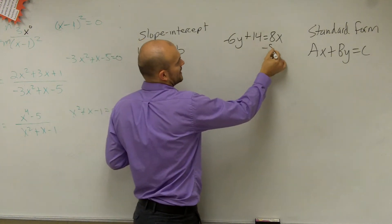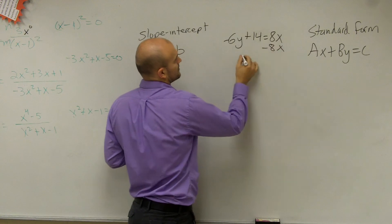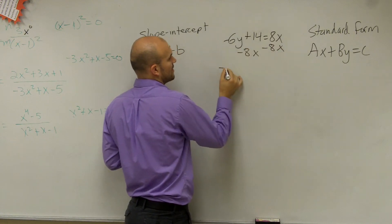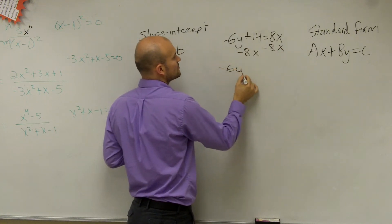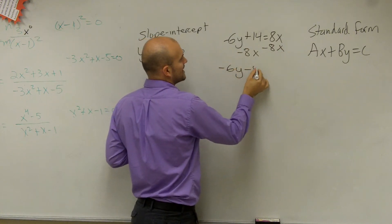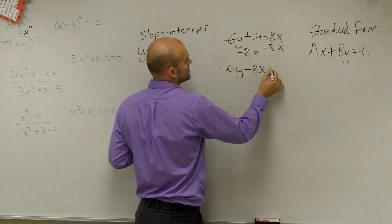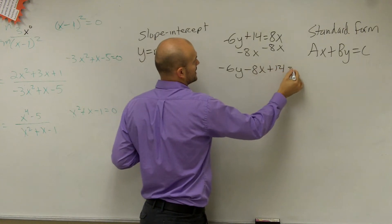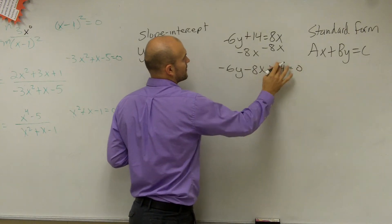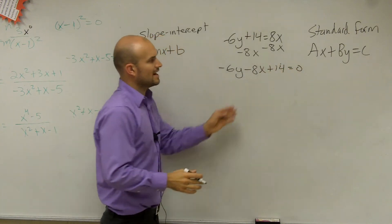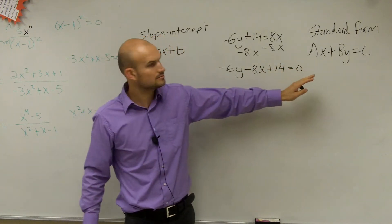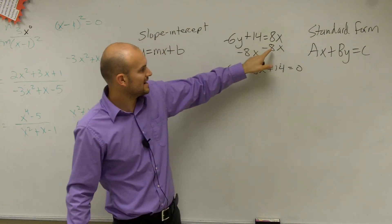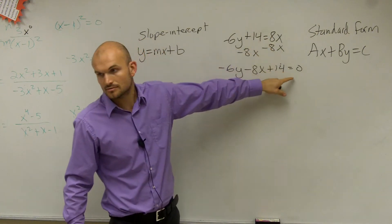So I'm going to subtract the 8x on both sides. Therefore, I have negative 6y minus 8x plus 14 equals 0. Because 8x minus 8x is 0.